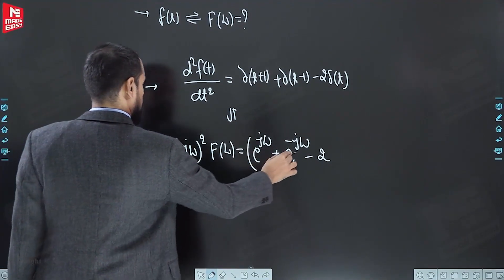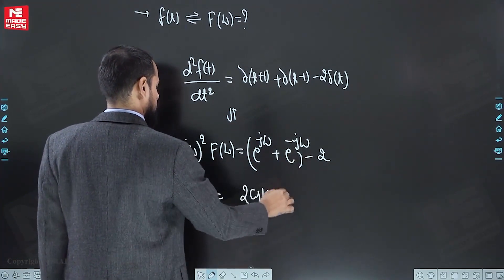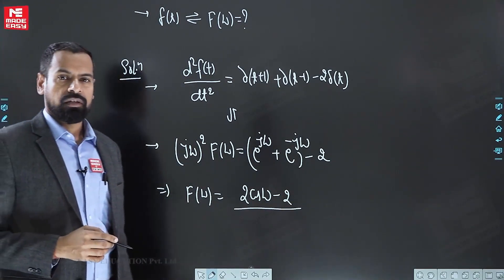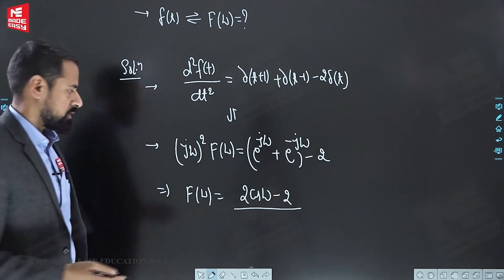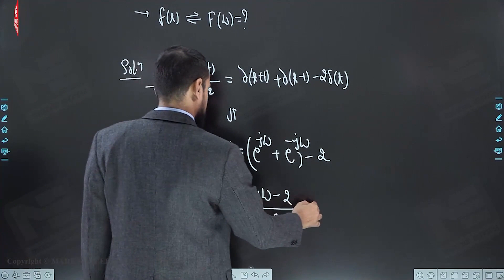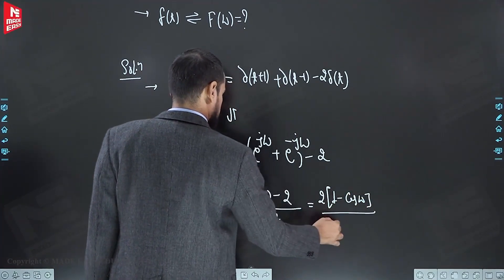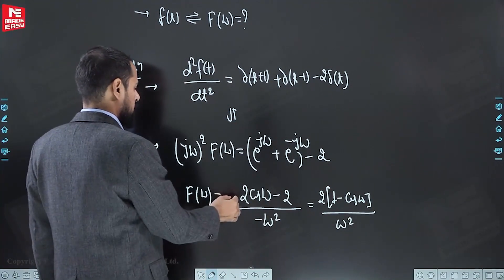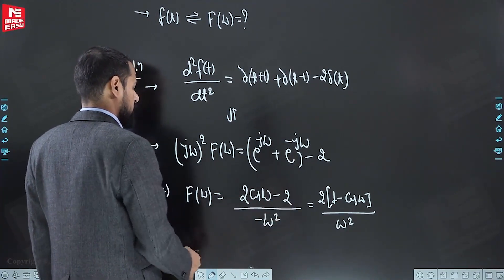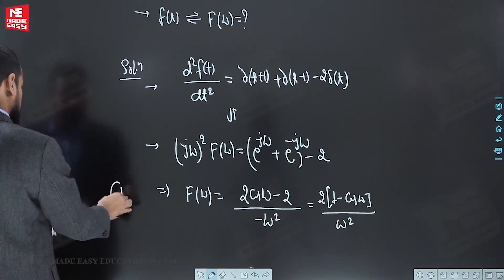So we get F(ω). The combination of e^(jω) and e^(−jω) converts into cosine, giving 2cos(ω). The term (jω)² equals j²ω² = −ω². Multiplying numerator and denominator by minus one, the final answer is F(ω) = 2(1 − cos ω) / ω². Looking at all four options, option D satisfies this result.